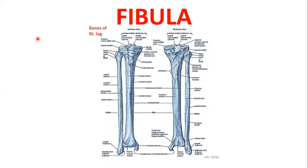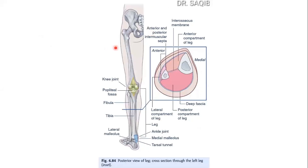Hi, I am Dr. Sakim Mansour from my channel Learning Anatomy, and today I will discuss with you the last video of my lecture series on the bones of the lower limb, which is the fibula bone. You can see this is the articulated lower limb — this is the hip bone, this is the sacrum, this is the femur, this is the tibia already discussed, and this is the fibula lying on the lateral side, a slender bone that corresponds to the ulna of the upper limb. And this is the articulated foot.